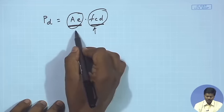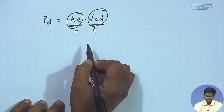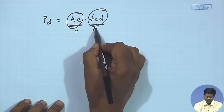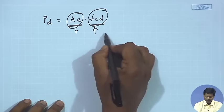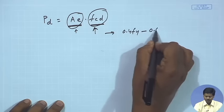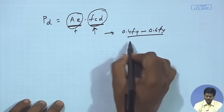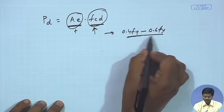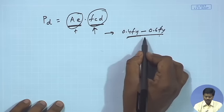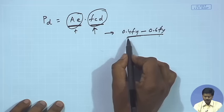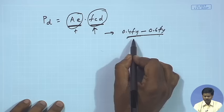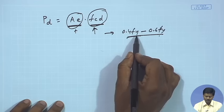Then we can find out the area required and proceed with the design. Generally we consider Fcd as 0.4 fy to 0.6 fy. This is a trial process — at the beginning we start with that value and at the end we will understand whether the member we have chosen is fine or not. If it is not fine then we have to increase or decrease accordingly.